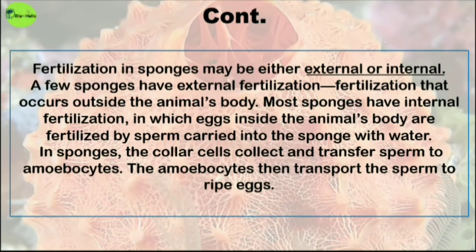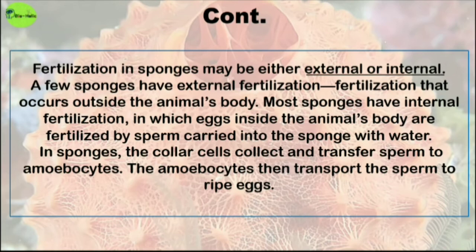Fertilization in sponges may be either external or internal. A few sponges have external fertilization, which occurs outside of the animal's body. Most sponges have internal fertilization, in which eggs inside the animal's body are fertilized by sperm carried in with water currents. In sponges, the collar cells collect and transfer sperm to the amoebocytes, and the amoebocytes then transport the sperm to the ripe, or mature, eggs.